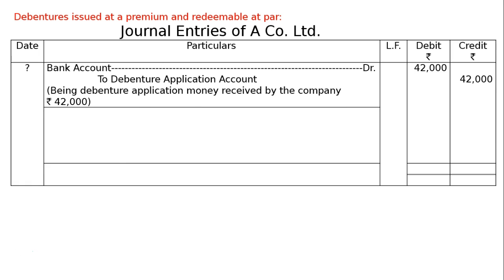The next entry is a due entry: Debenture Application Account debited Rs. 42,000 — to 12% Debentures Account Rs. 40,000 face value, and Securities Premium Reserve Account Rs. 2,000. Premium on issue of debentures is 5% of 40,000, that is 40,000 × 5/100 = Rs. 2,000. Being issued Rs. 40,000, 12% debentures at a premium of 5%, redeemable at par. Totalling is Rs. 84,000 in both debit and credit columns, and this is the final answer.